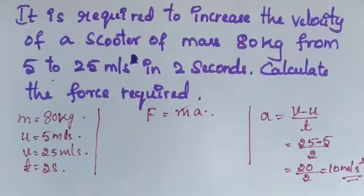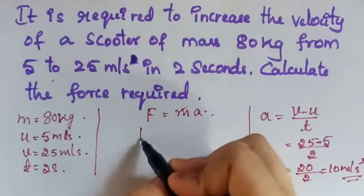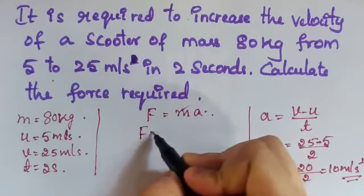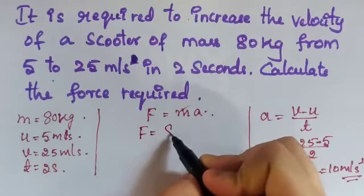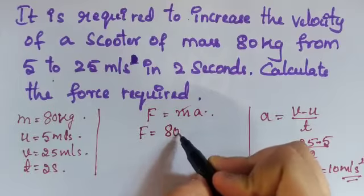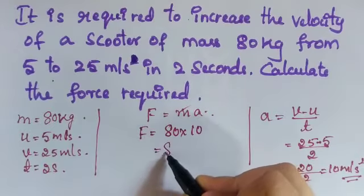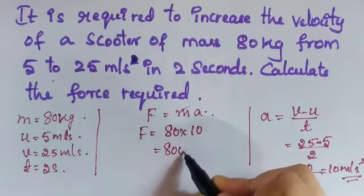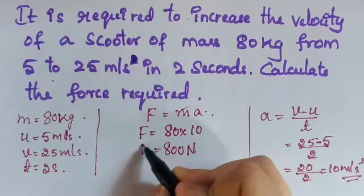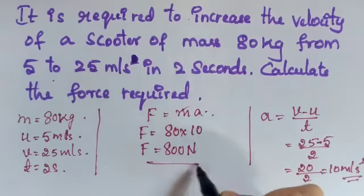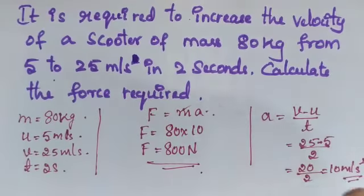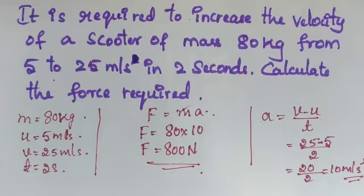25 minus 5 is 20, divided by 2 equals 10 meter per second squared. So acceleration is 10 m/s². Force equals mass 80 into acceleration 10, giving 800 Newton. This is the force required to increase the velocity of the 80 kg scooter.